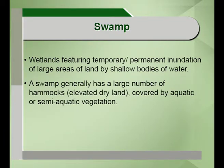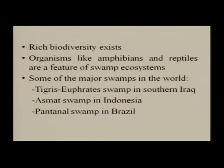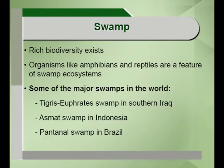Swamps are wetlands featuring temporary or permanent inundation of large areas of land by shallow bodies of water. A swamp generally has a large number of elevated dry land areas referred to as hammocks, covered by aquatic or semi-aquatic vegetation. In India these are called reeds, found in parts of Kaziranga National Park. Other examples include the woody Everglades of Florida and papyrus found in the Nile Delta swamp. The two main types are true or forest swamps and transitional or shrub swamps. Major world swamps include the Pantanal in Brazil, the Asmat swamp in Indonesia, and the Tigris-Euphrates swamp in southern Iraq.